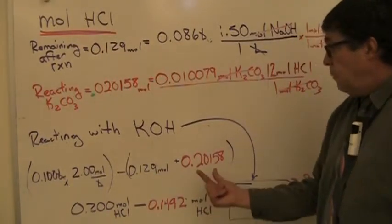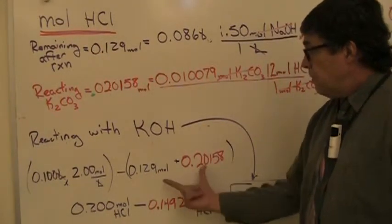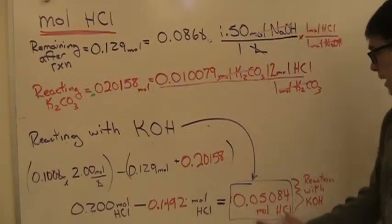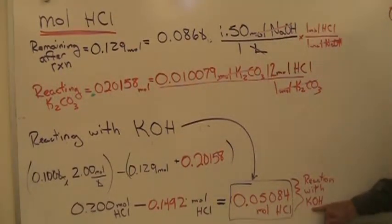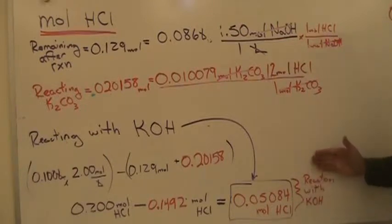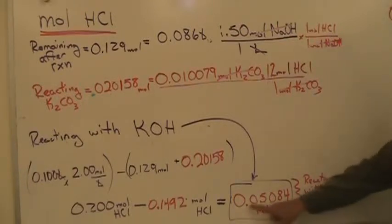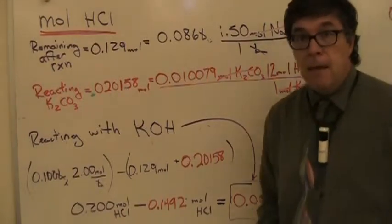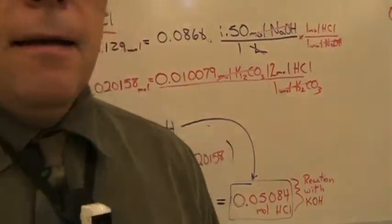I know I had this much left over and I reacted this much, so if I subtract these from the original amount it will tell me how much reacted with the potassium hydroxide. So 0.05084 moles of HCl reacted with potassium hydroxide.